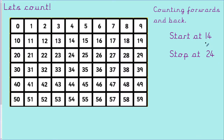Let's do our daily counting. Today we are starting at the number fourteen and finishing at the number twenty-four. Let's count together: fourteen, fifteen, sixteen, seventeen, eighteen, nineteen, twenty, twenty-one, twenty-two, twenty-three, twenty-four. Excellent, well done.